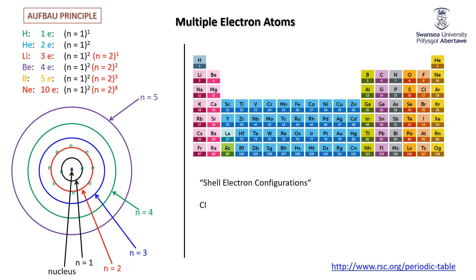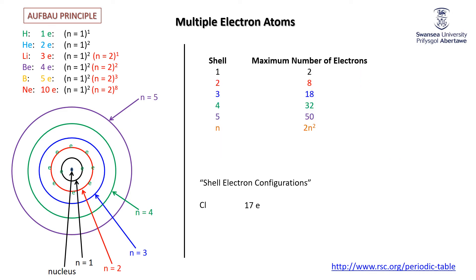Let's apply this to the periodic table. Take chlorine — atomic number 17, so 17 electrons. Where do they go? The first two go into the first shell. The next eight go into the second shell. That's ten. We have seven left. Can we put seven in the third shell? Yes — the third shell can hold up to 18. So chlorine's shell electron configuration is: two in the first shell, eight in the second shell, seven in the third shell.